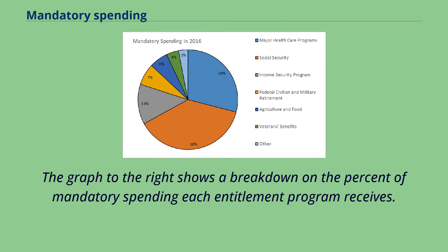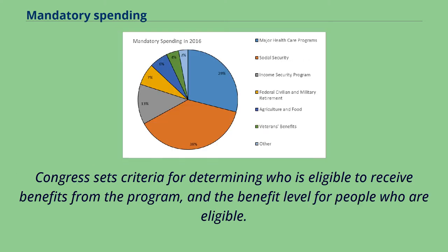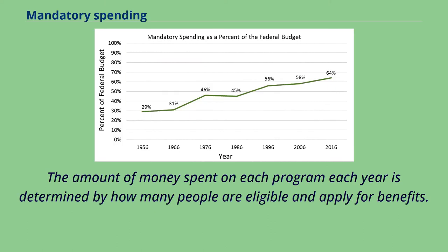The graph to the right shows a breakdown of the percent of mandatory spending each entitlement program receives. Many mandatory spending programs' spending levels are determined by eligibility rules. Congress sets criteria for determining who is eligible to receive benefits and the benefit level for eligible people. The amount spent on each program each year is determined by how many people are eligible and apply for benefits.